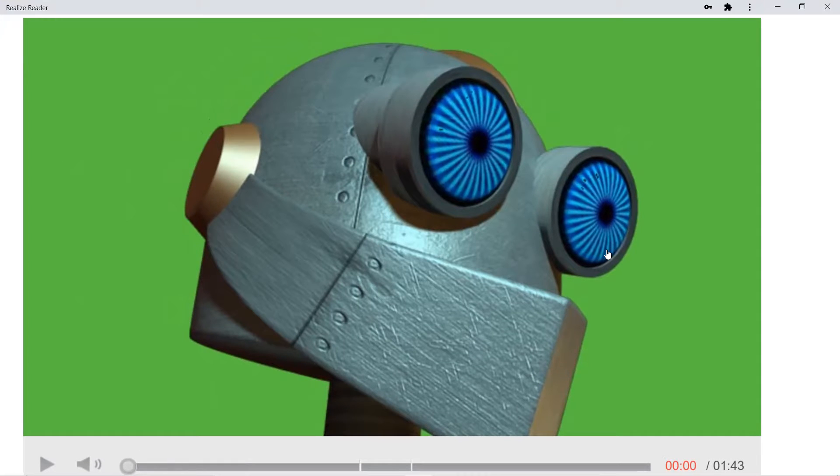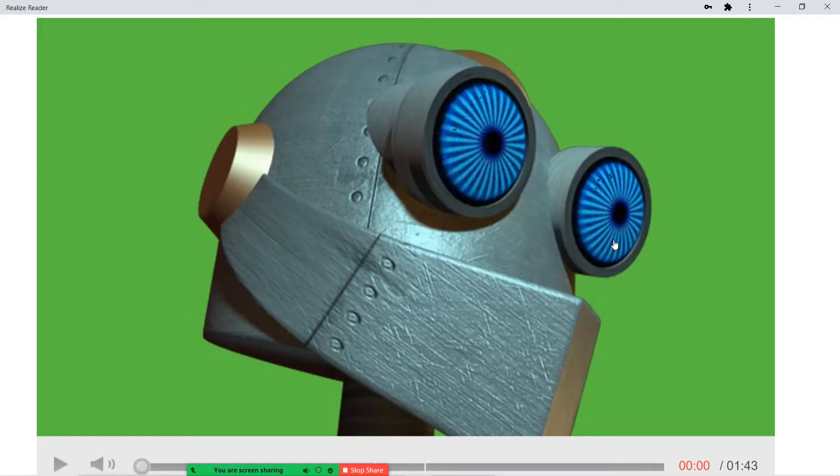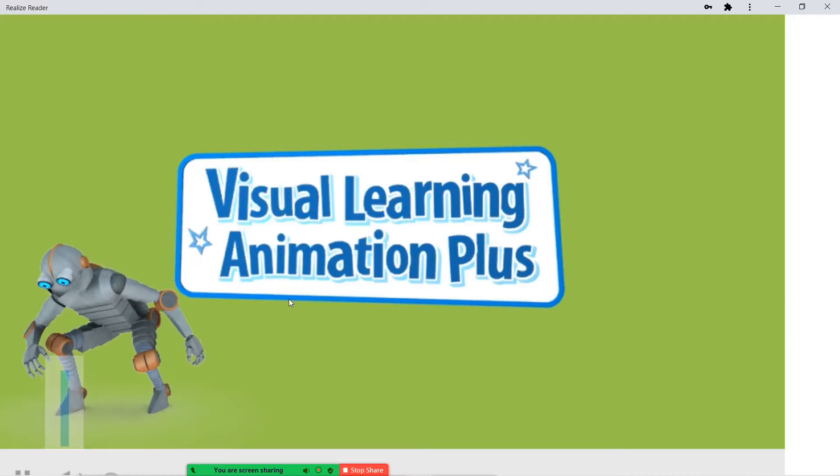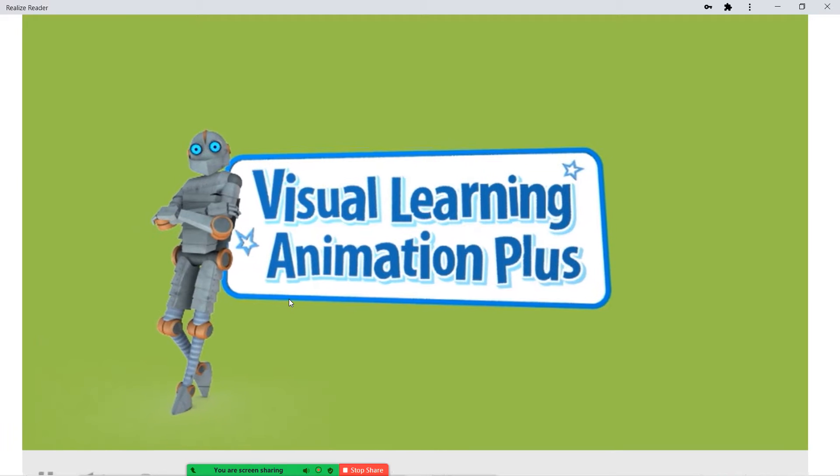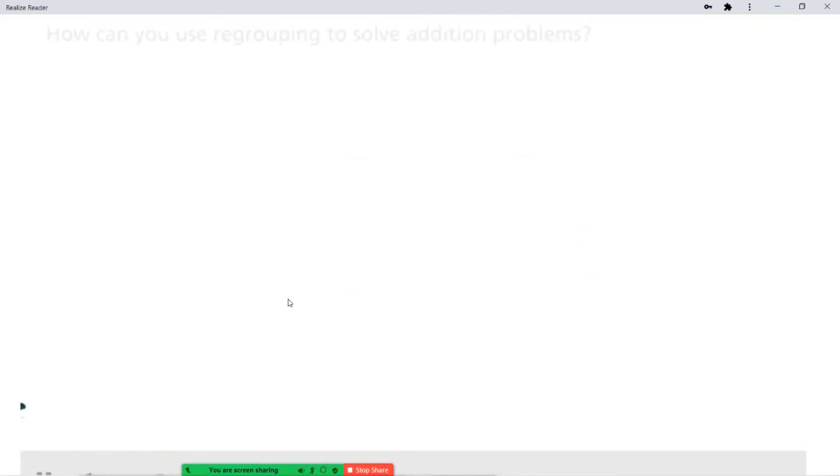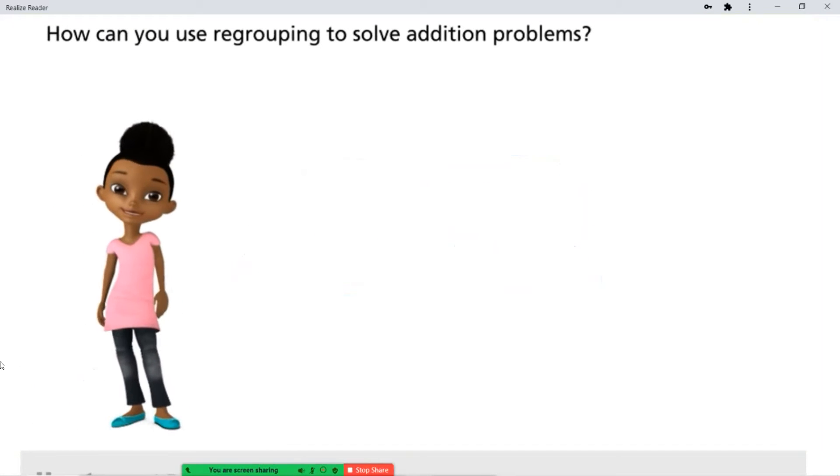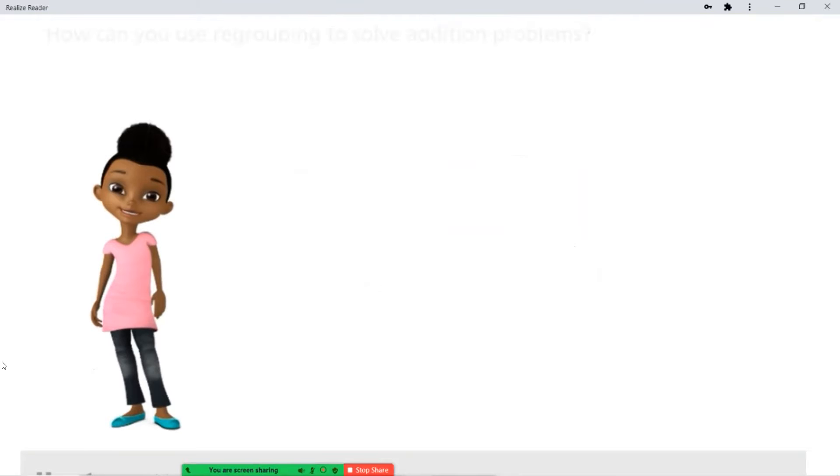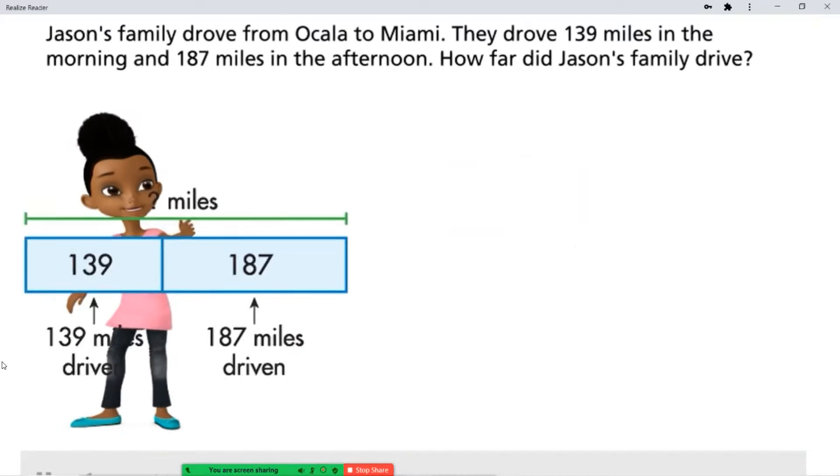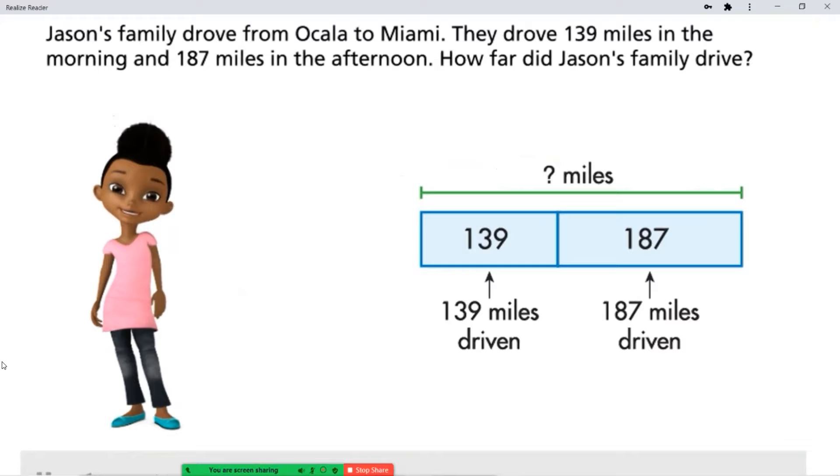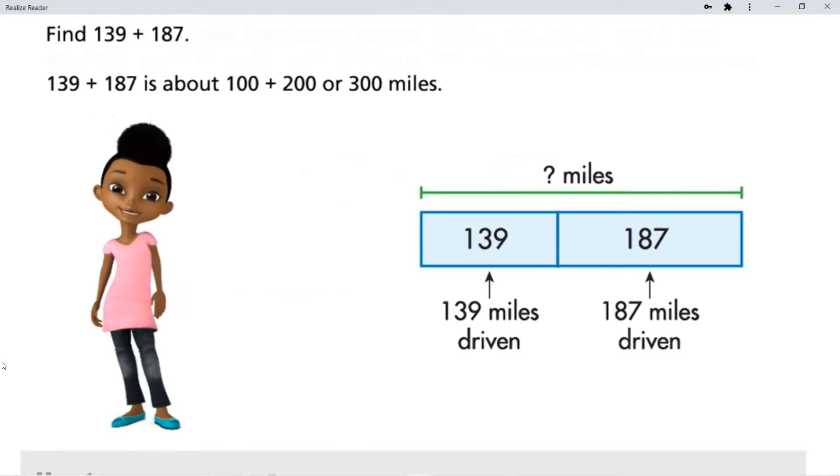Now we're going to look at more examples of this right now in our video lesson and in our guided practice and notes. How can you use regrouping to solve addition problems? Jason's family drove from Ocala to Miami. They drove 139 miles in the morning and 187 miles in the afternoon. How far did Jason's family drive?